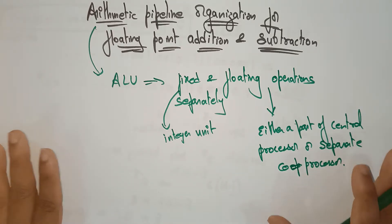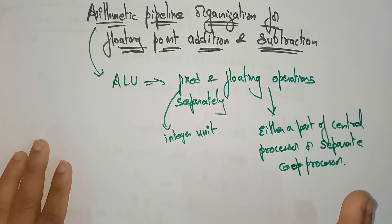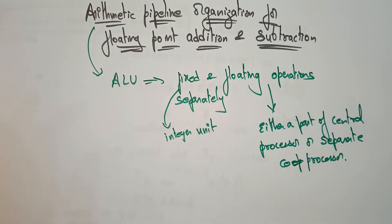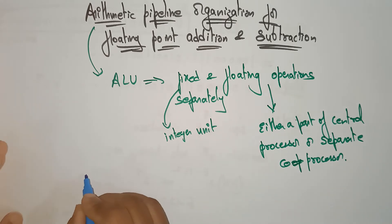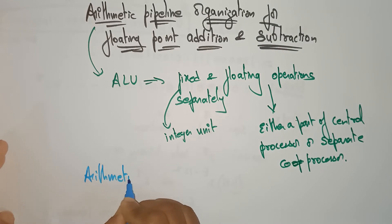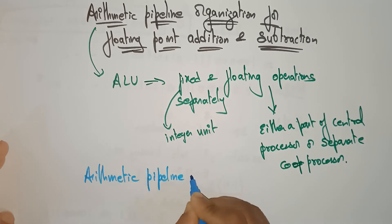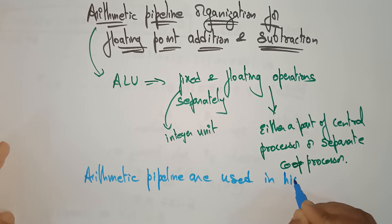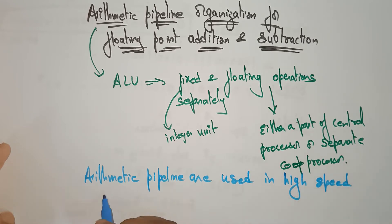Now we will discuss about arithmetic pipeline organization. Why are we using arithmetic pipelines? Why can't we just use the ALU which performs all logical and arithmetic operations? Because arithmetic pipelines are used in high-speed computers. We are going to use this arithmetic pipeline organization in high-speed computers.